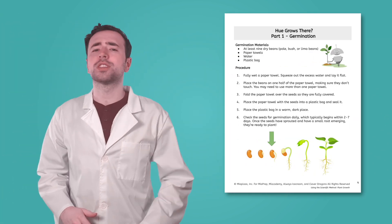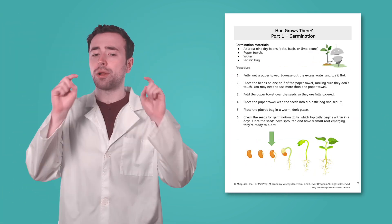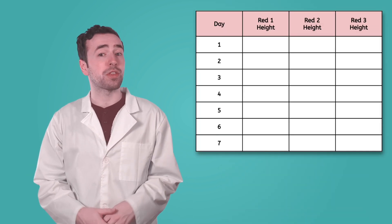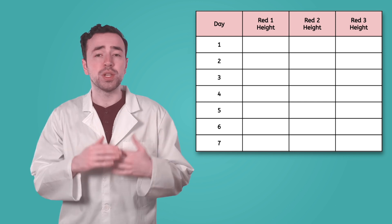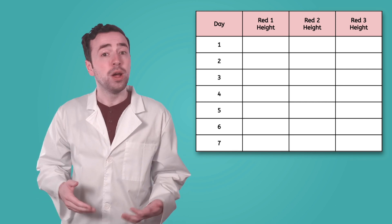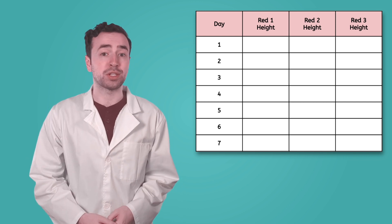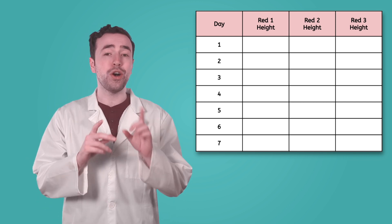All the instructions for each step of this experiment are in your PDF. There you'll also find data tables for recording plant growth for 7 days. If you need more time for your bean plants to grow, feel free to continue the experiment. You can add on to the tables in your PDF, or create your own data table.